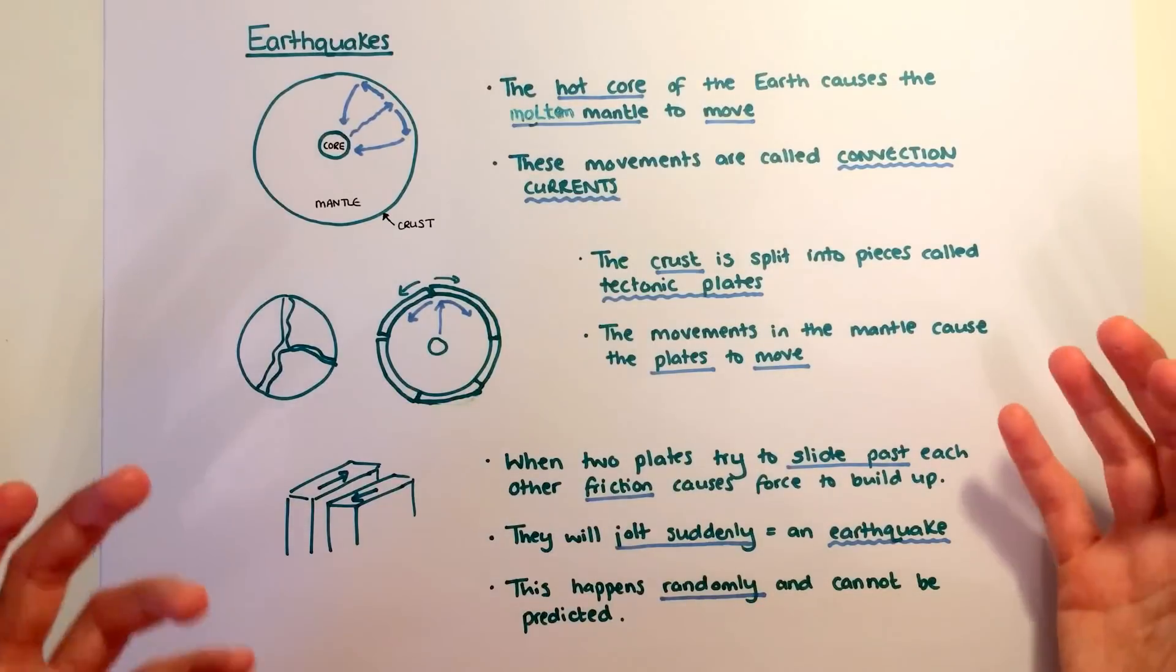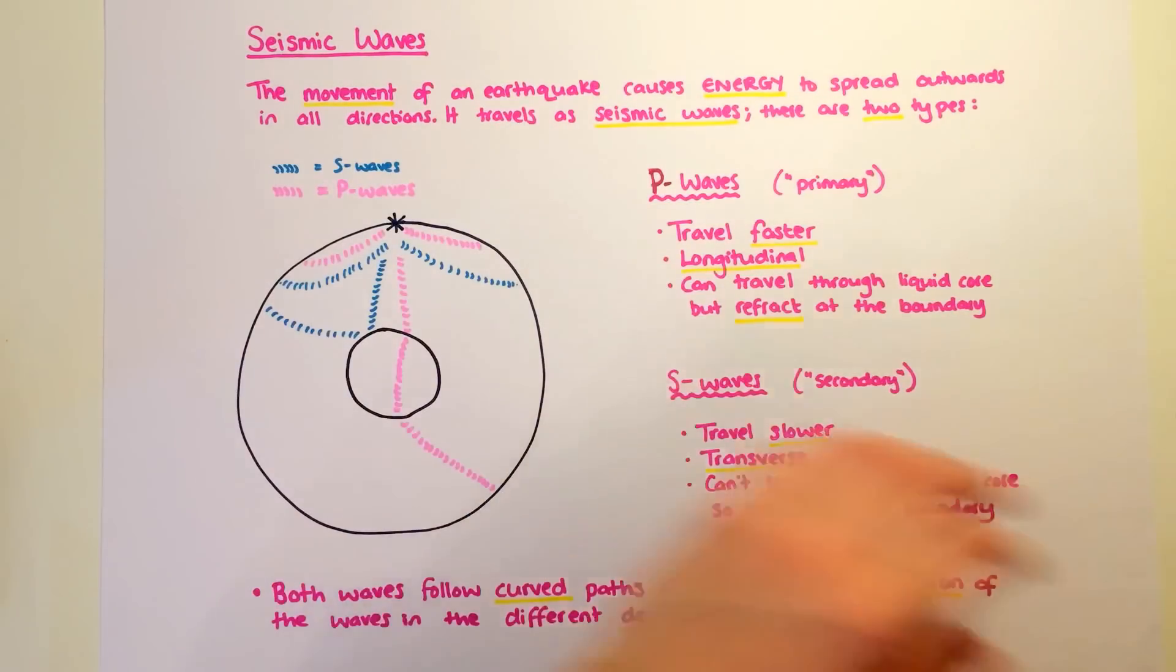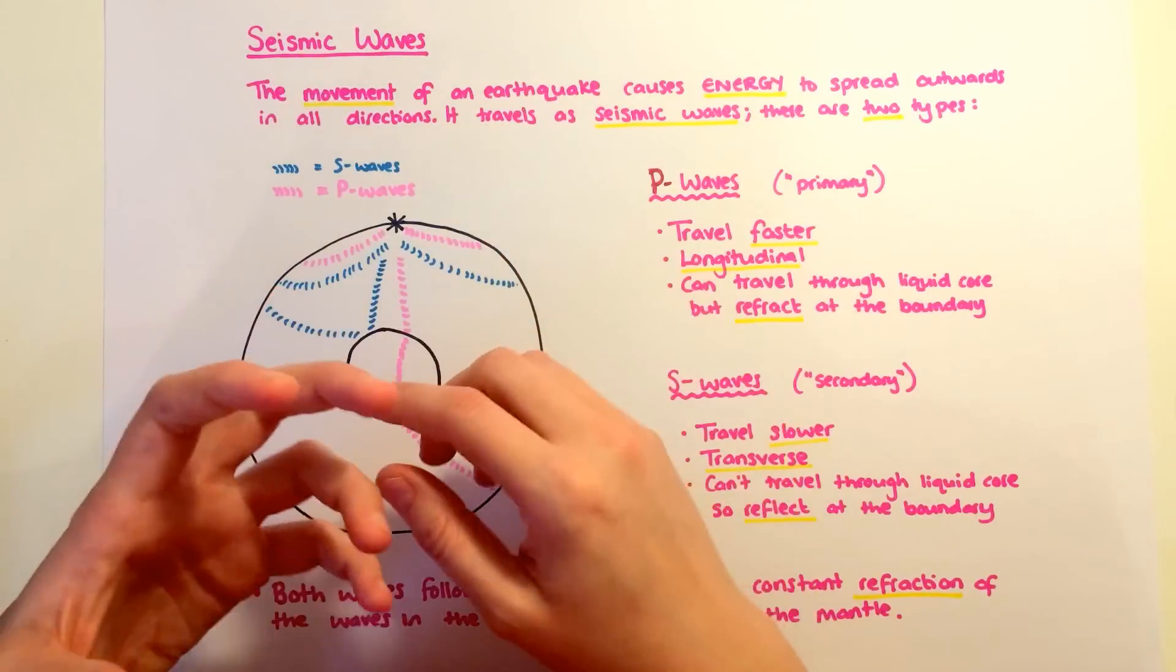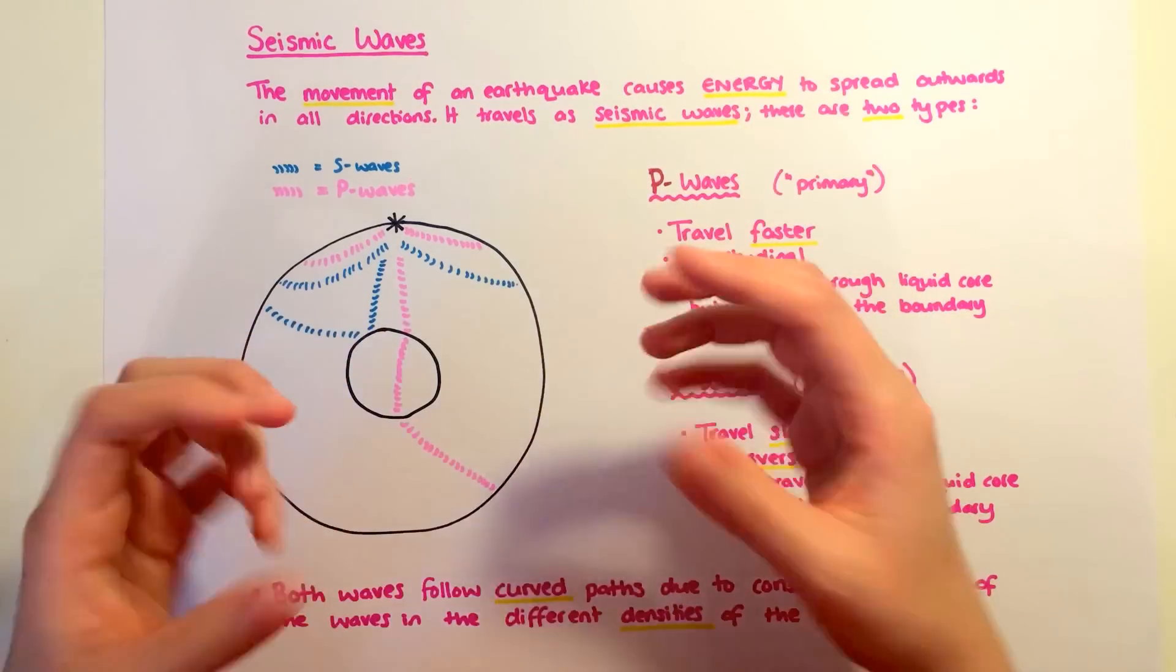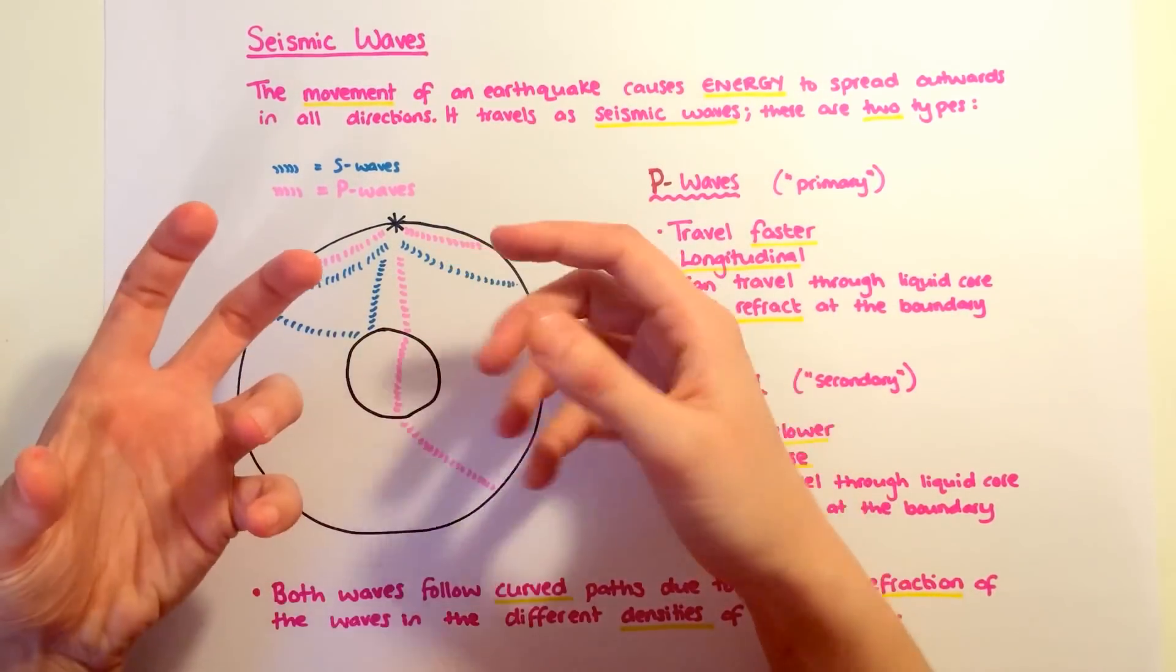This happens randomly and cannot be predicted. When this earthquake happens, that energy has to go somewhere and it spreads outwards in all directions. As we know, energy travels as waves.